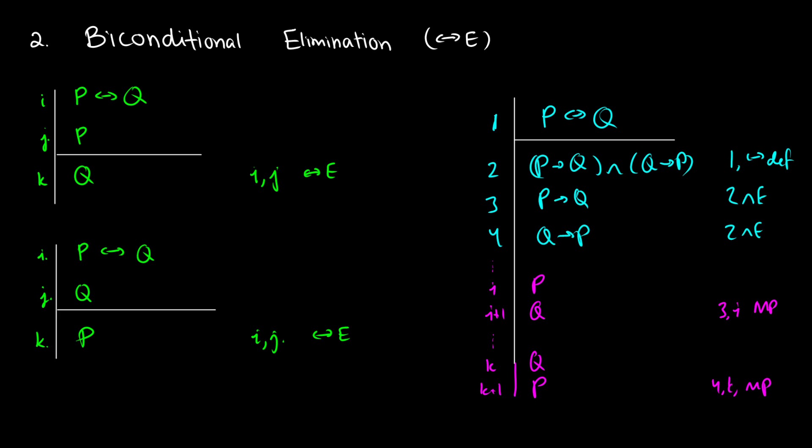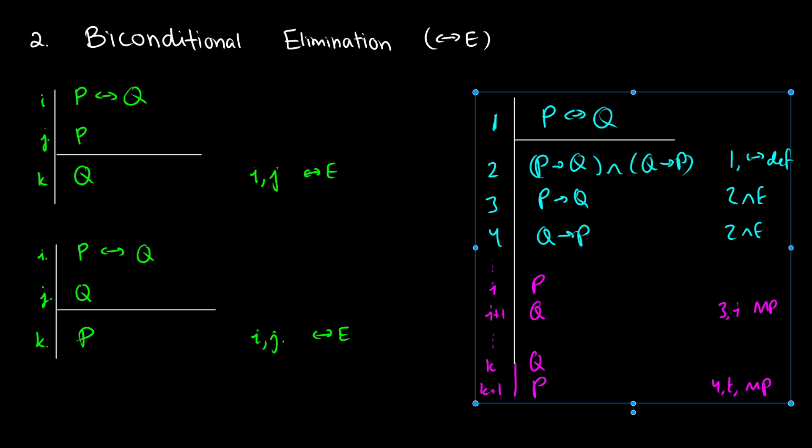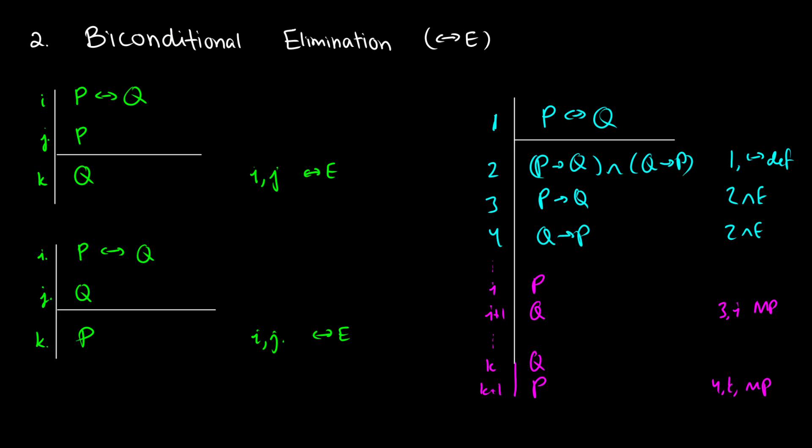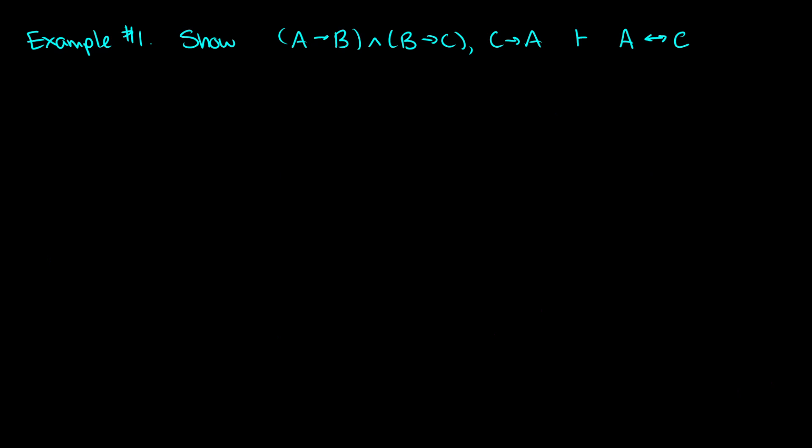So this is sort of what's happening with biconditional elimination. Sometimes you have to prove this one before you can use it — it would look very similar to how this looks on the right. Just whatever your assumption with P or Q is, you'd put them up in the assumptions at the top. Let's do a couple of examples. So the first one, I want to show that A arrow B and B arrow C, C arrow A means that A if and only if C.